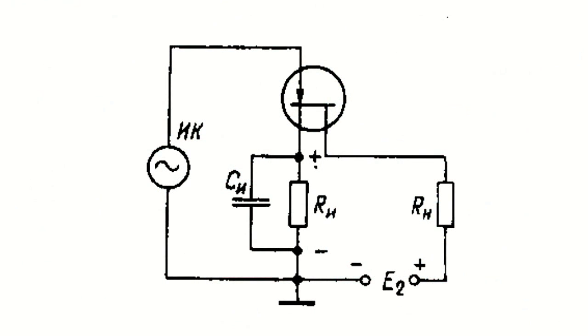Input terminals are connected to the source of vibrations and the output ones are connected to the load. In practical amplification stages, power supply from a single source E2 is usually used, as shown in this figure, for the transistor with an N-channel. To obtain continuous reverse voltage at the control N-P junction, a resistor bypassed with capacitor CS is connected to the source wire. The constant drain current generates a resistor voltage, which through the source of vibrations SV is fed to the N-P junction.